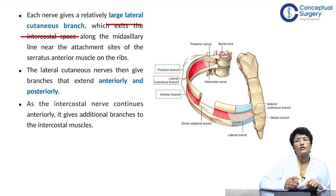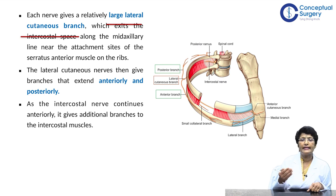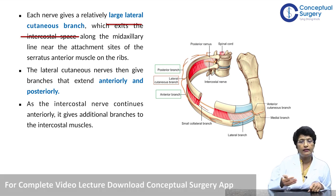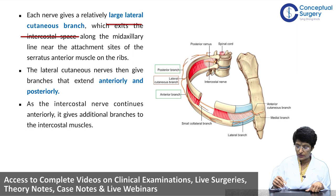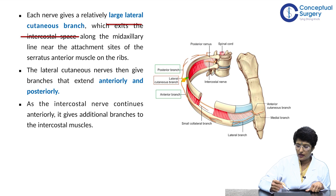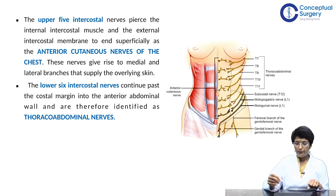Each intercostal nerve gives a large lateral cutaneous branch. The lateral cutaneous branch exits along the midaxillary line, very close to the attachment of the serratus anterior muscle, and then gives branches extending anteriorly and posteriorly. As the intercostal nerve continues anteriorly, it gives more branches to the intercostal muscles. The upper five intercostal nerves are particularly relevant to the breast surgeon.